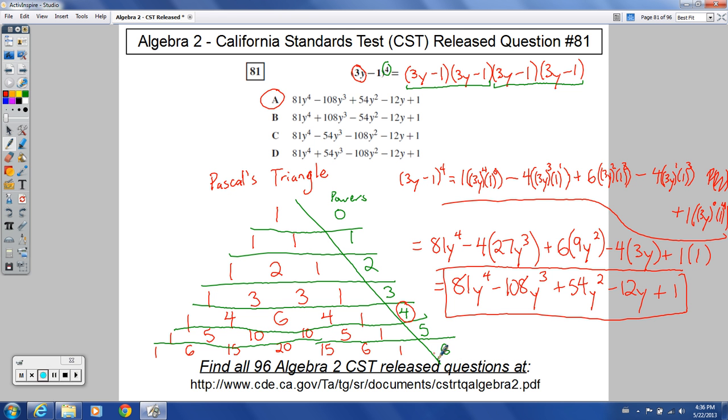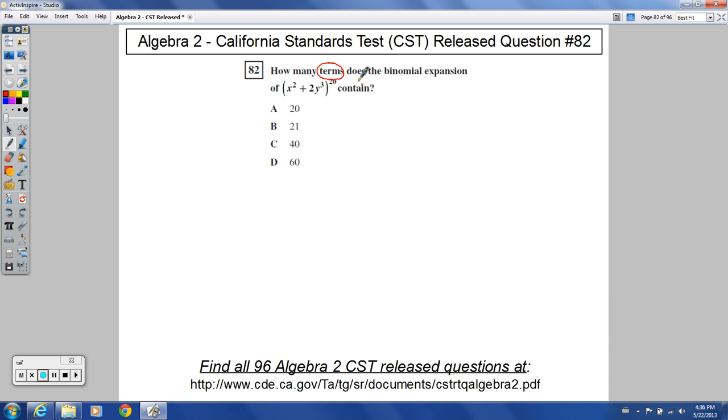And that pattern will continue. You get down to row 20, you're going to have 21 terms. This one, it's always one more than the power.